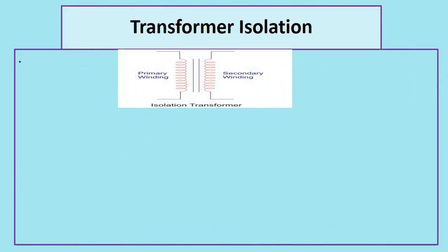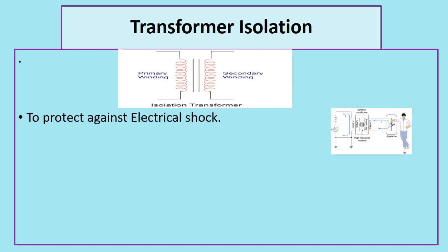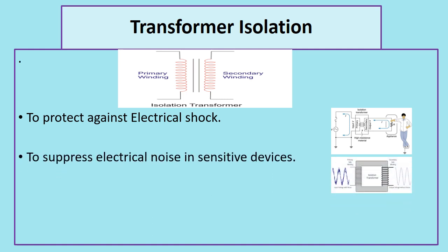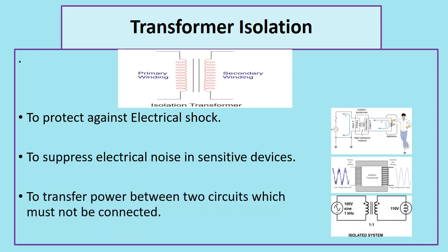In transformer isolation, an isolation transformer is used to transfer AC power from a source to equipment while isolating the powered device, to protect against electrical shock, to suppress electrical noise in sensitive devices, and to transfer power between two circuits which must not be directly connected.